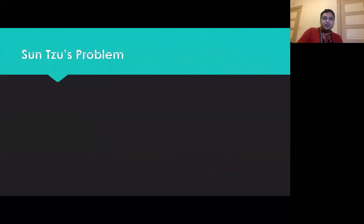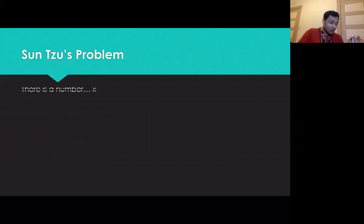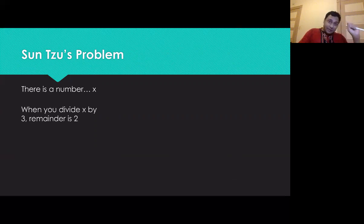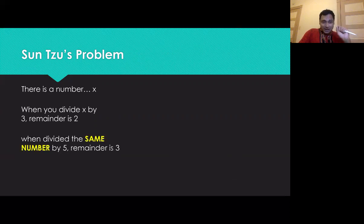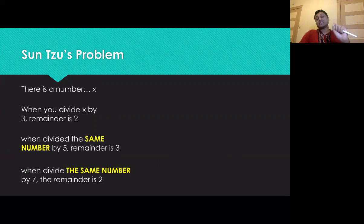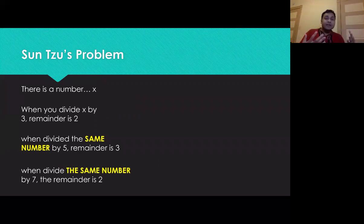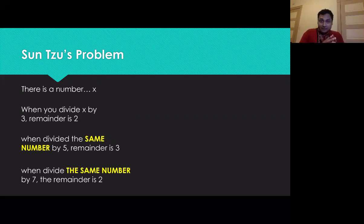Let's revisit Sun Tzu's problem before we start solving it. We want to find X such that: when divided by three the remainder is two, when divided by five the remainder is three, and when divided by seven the remainder is two. We now know the arithmetic of remainders — add two numbers and remainders get added; multiply two numbers and remainders get multiplied. Now we are ready for the switch method.